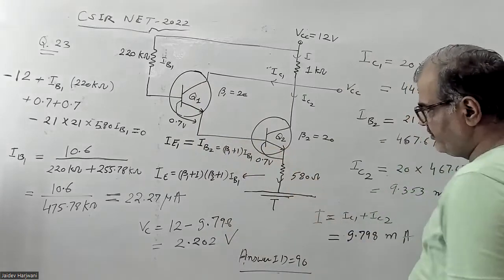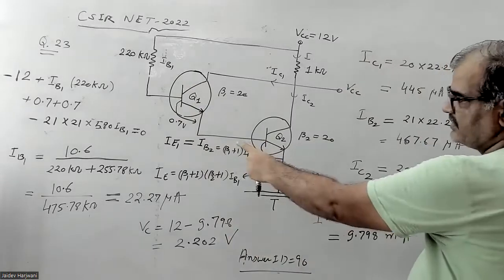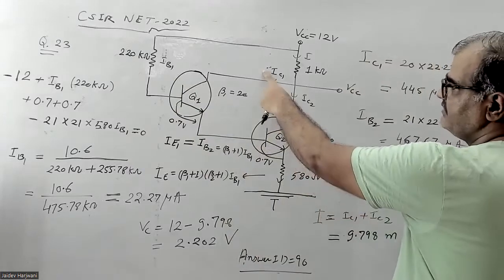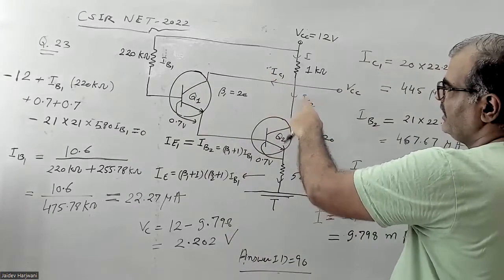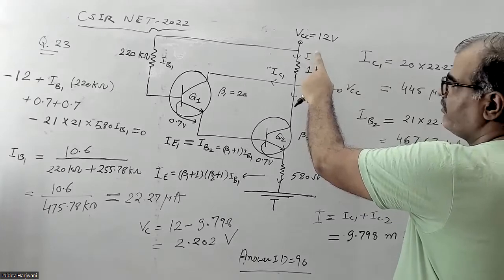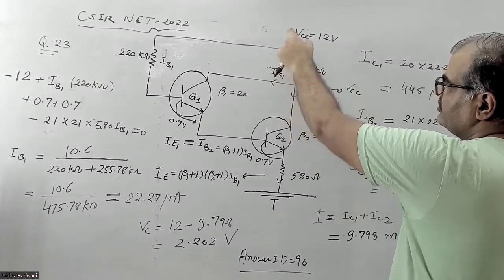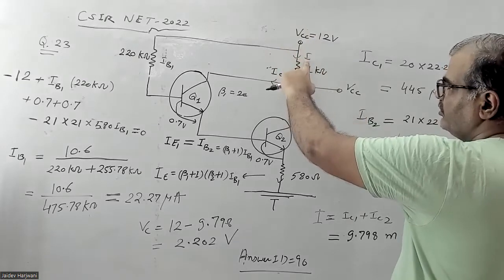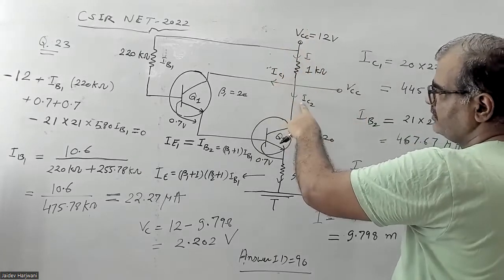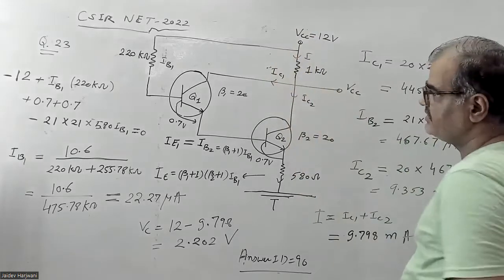Once you know IB2, we also know IC2. So once I know IC1 and IC2, I immediately know what is IE. Once I calculate IE, I can calculate the voltage drop here. So VCC is here — I can find what IE is, which is IC1 plus IC2. So I know what the drop is here, and I can calculate what is the VCC.